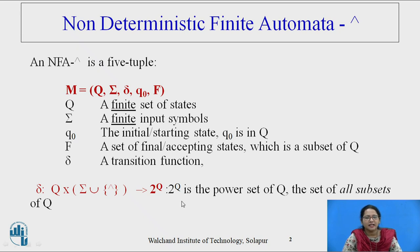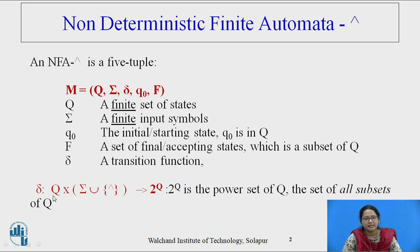In DFA there is exactly one transition for each and every symbol — that is, the machine in any state by processing a single symbol at a time may move to 2^Q, where 2^Q is the power set of Q. In addition to the alphabet, a null symbol means without processing anything the machine may move to 2^Q, the set of all subsets of Q.